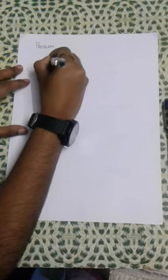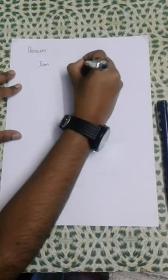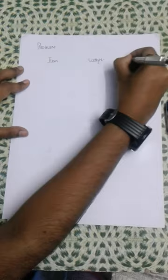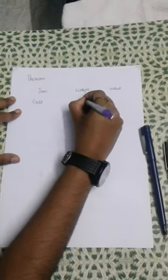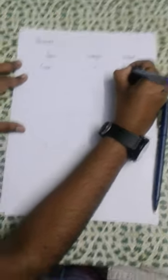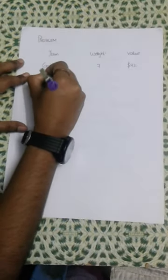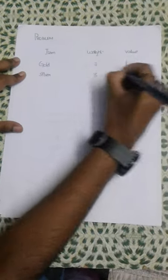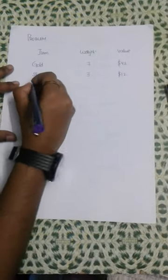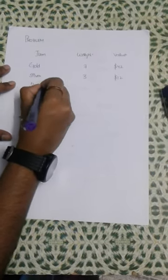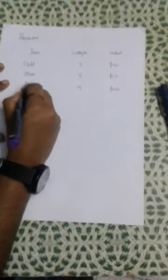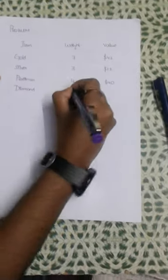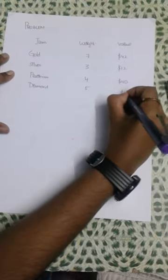The items are listed below with their item name, weight, and value. The first item is Gold with weight 7 and value 42. The second item is Silver with weight 3 and value 12. The third item is Platinum with weight 4 and value 40. The fourth item is Diamond with weight 5 and value 25.